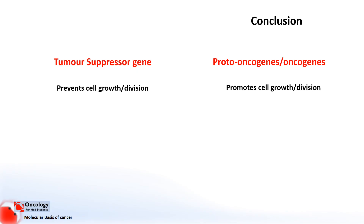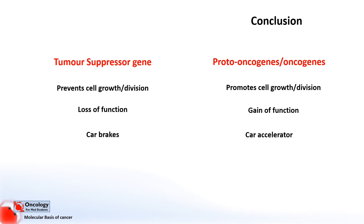Now that we've covered both tumor suppressor genes and oncogenes, let's finish with a quick comparison. Where tumor suppressor genes are involved in preventing cell growth and division, proto-oncogenes — or their mutated counterparts, oncogenes — promote cell growth and division. It's normally a loss of function of tumor suppressor genes that leads to the development of cancers, whereas with oncogenes, it's a gain of function. To use the car analogy, tumor suppressor genes are like the car brakes on the cell cycle, and in the case of oncogenes, they're like the car accelerator.